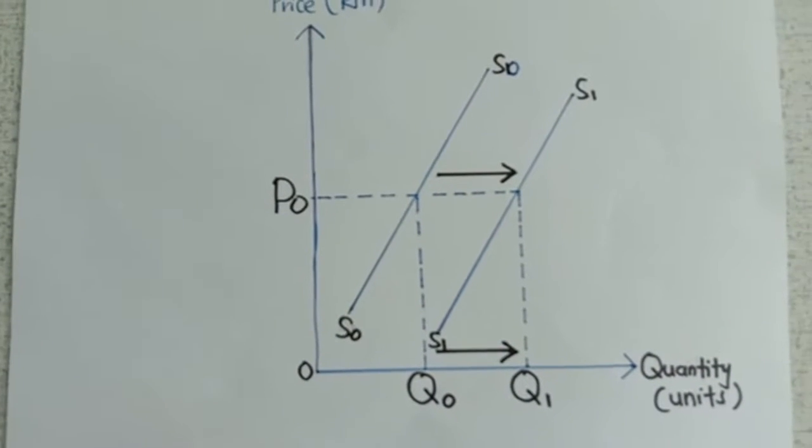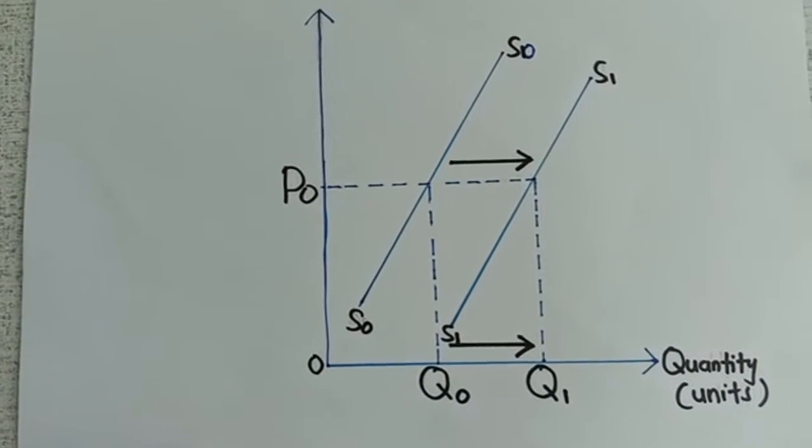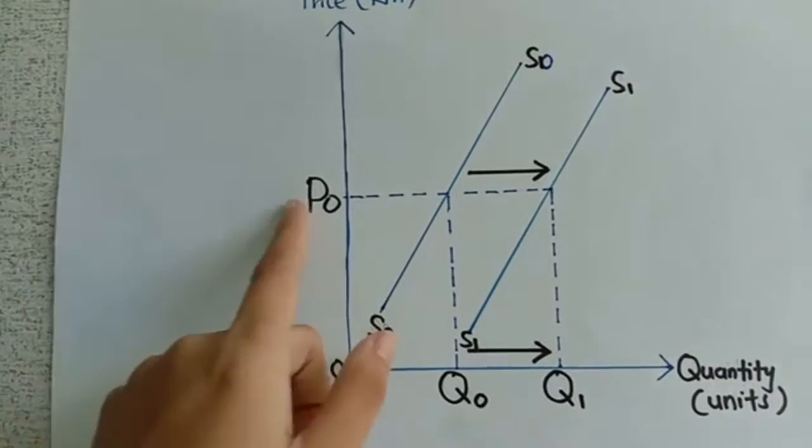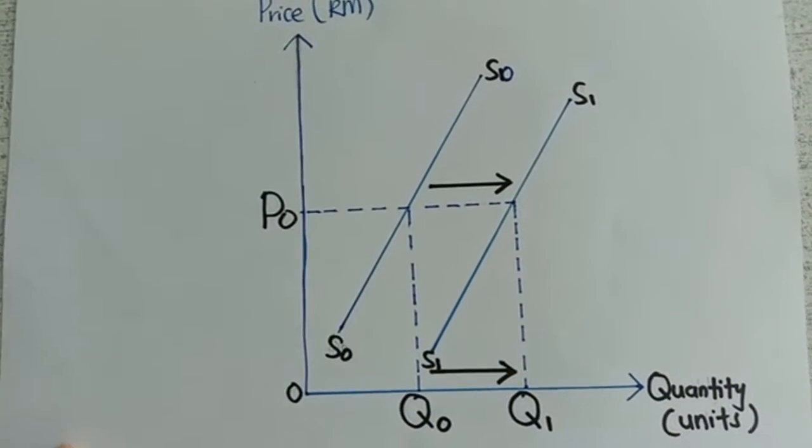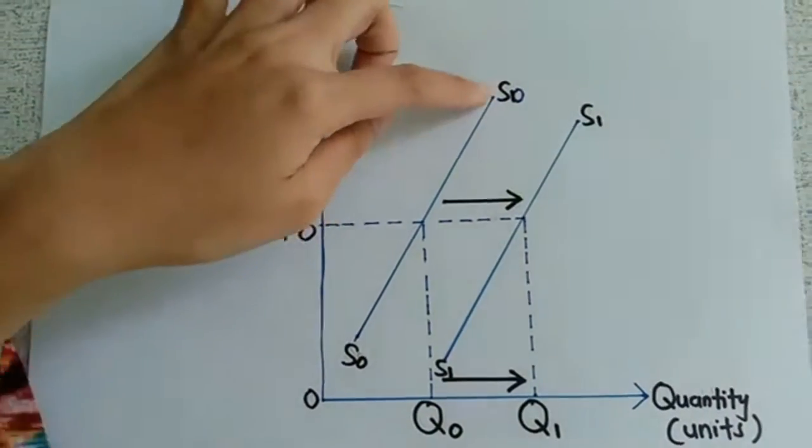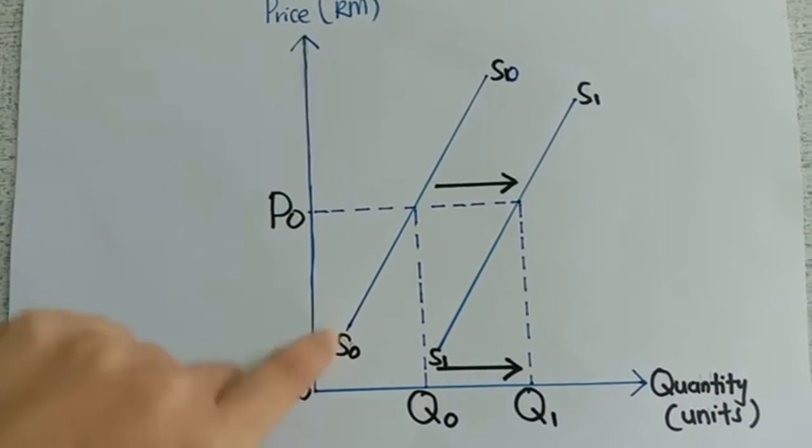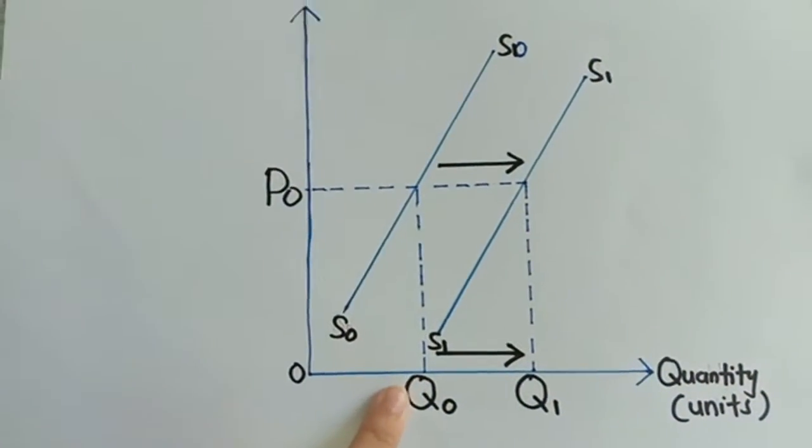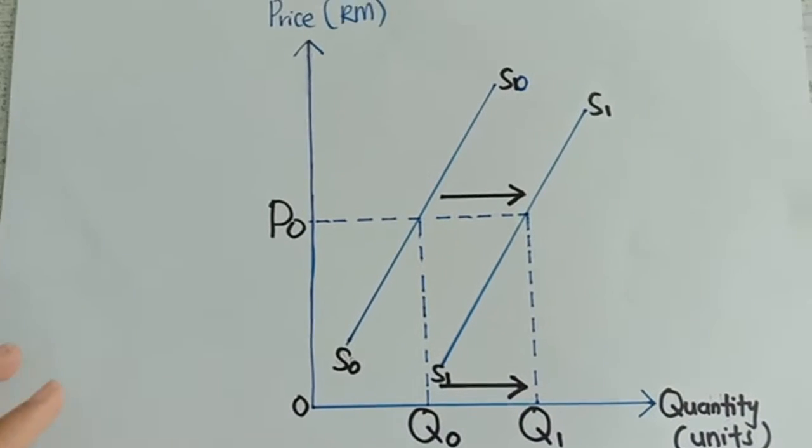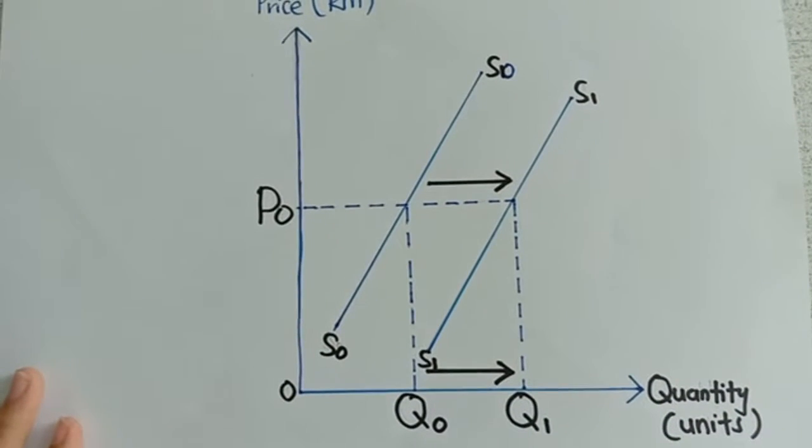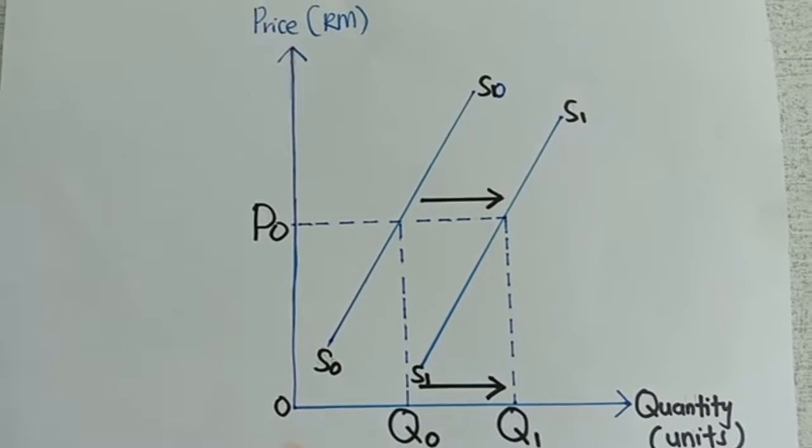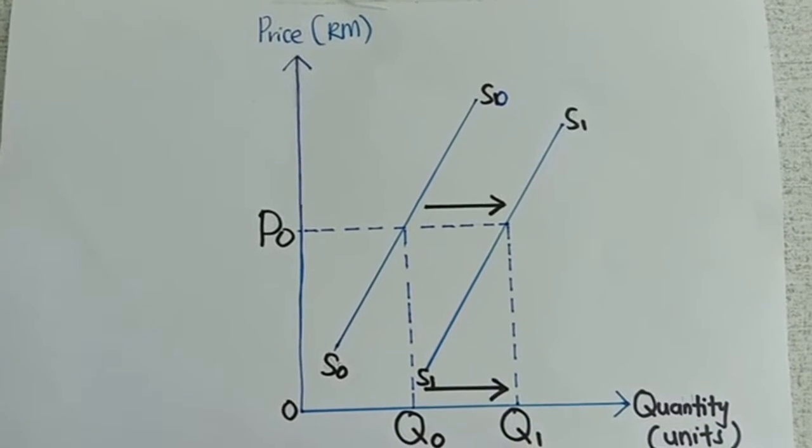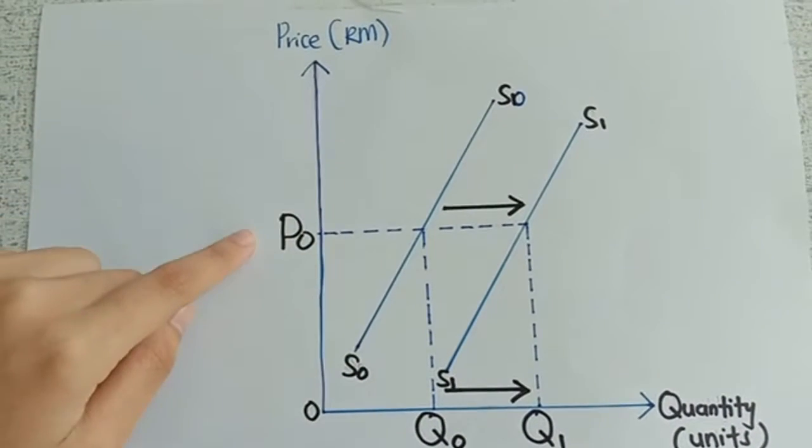The bid curve above shows the bid increase. The supply curve shifts to the right in line with the supply curve originally from S0 to S1. This curve indicates that the handset Vivo Y17 has increased from Q0 to Q1 at the same P0 price point.